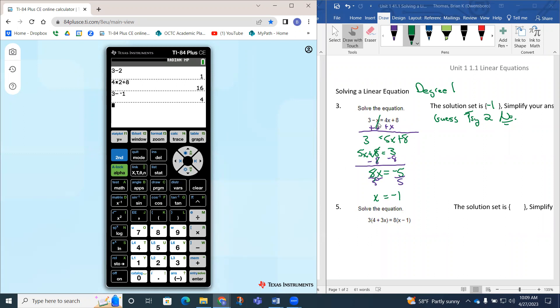On the right side, if I substitute negative 1 in for x, that's 4 times negative 1 plus 8, which gives me 4 as well. Notice how the equation is true. Therefore, negative 1 is the solution to the equation because it made each side of the equation equal.